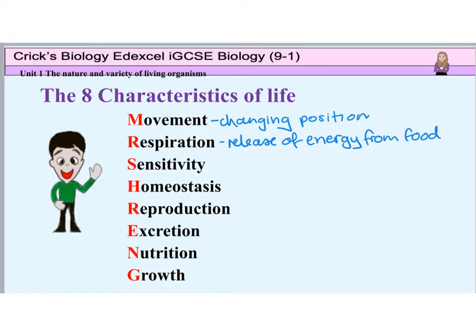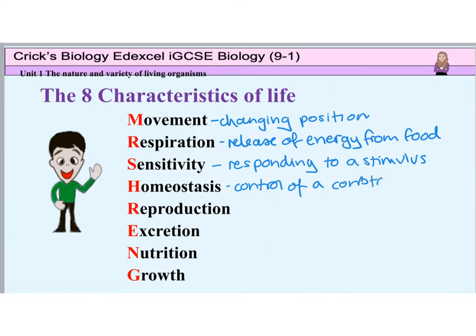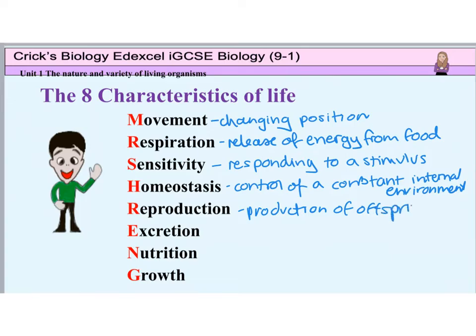The main organelle of respiration is the mitochondrion. S is for sensitivity, which is responding to changes in the surroundings — in other words, responding to a stimulus. H is for homeostasis, which is the control of a constant internal environment. For example, keeping our body temperature at 37 degrees C or maintaining blood glucose at a steady level. R is for reproduction, which is the production of new organisms — in other words, producing offspring. Whether this is a bacterium dividing into two by binary fission or a horse giving birth to a foal.